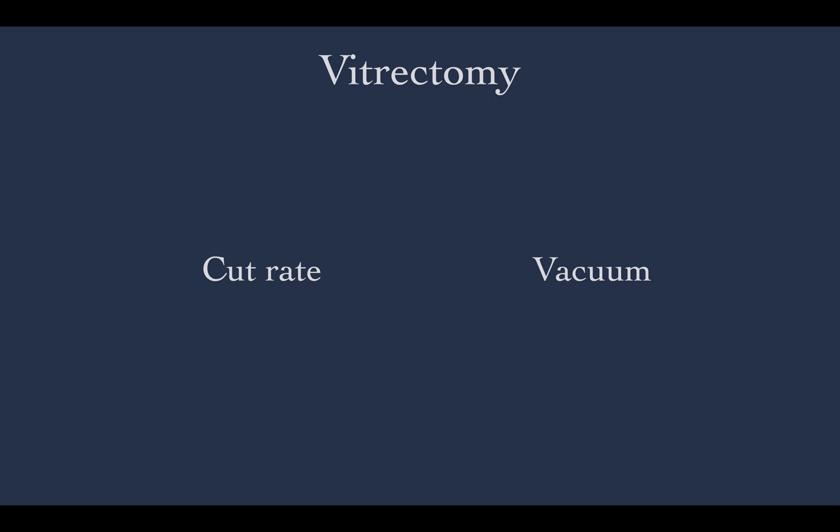Current vitrectomy machines use about 20,000 cut rate units. With the peristaltic pump, the vacuum can be proportional and you can control it with your foot, usually from 0 to 650.